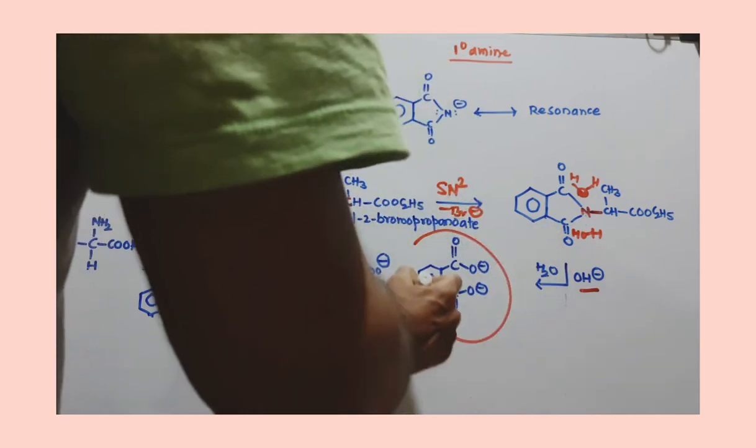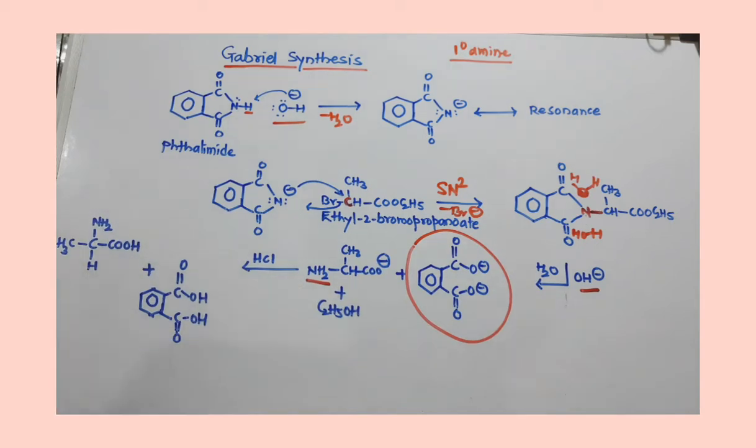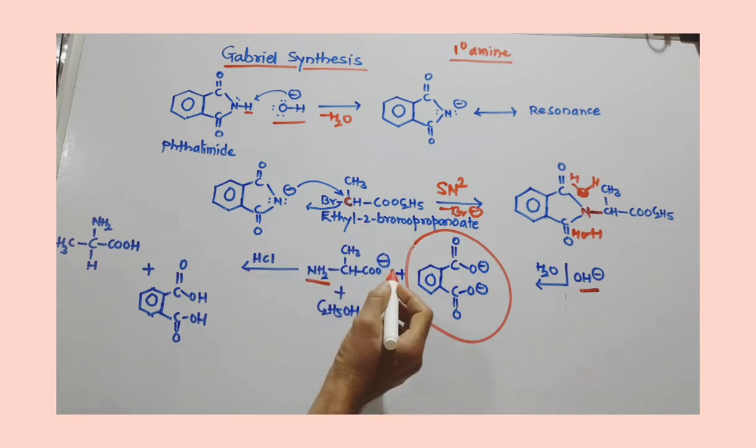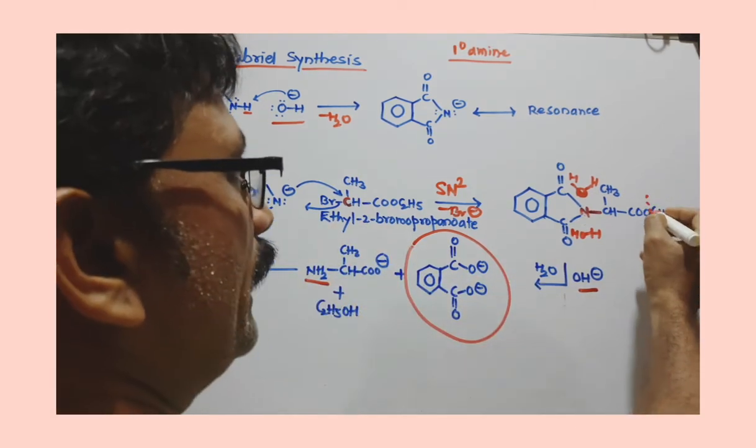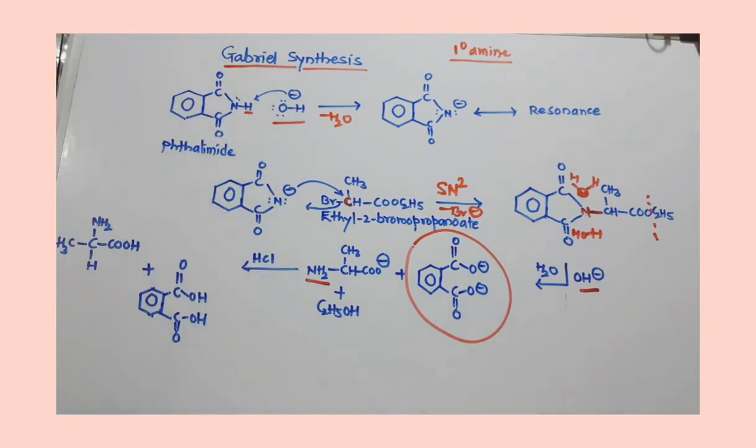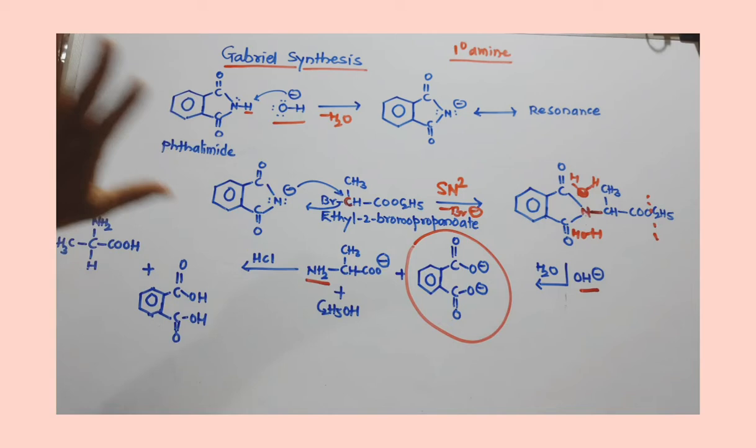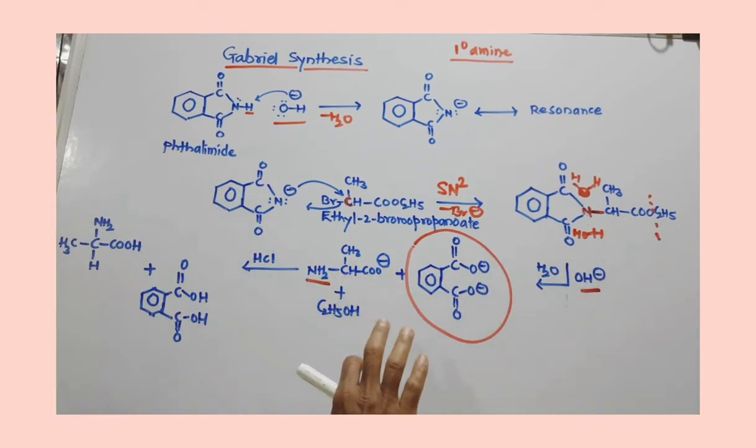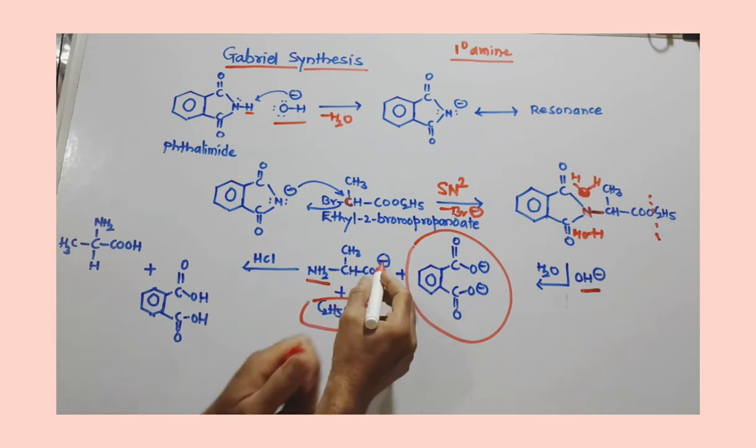Similarly, this will undergo hydrolysis, so ester hydrolysis. You can see here, ester hydrolysis. When ester is hydrolyzed, it is again converted to the acid and the alcohol. So alcohol is produced here, ethanol. But whatever acid is produced here, H is there.